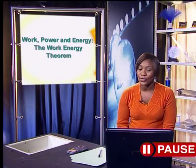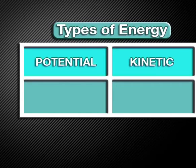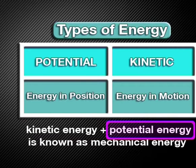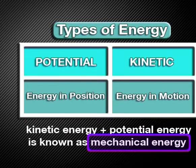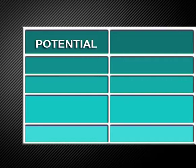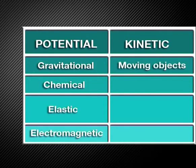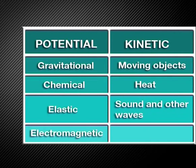Can you still remember what the two main types of energy are? Yes, kinetic energy and potential energy. Kinetic energy is the energy of an object due to its motion, and potential energy is the energy of an object due to its position. The sum of kinetic energy and potential energy is known as mechanical energy. Examples of potential energy include gravitational energy, chemical energy, elastic energy, and electromagnetic energy. Examples of kinetic energy include energy in moving objects, heat, sound waves, and solar energy.